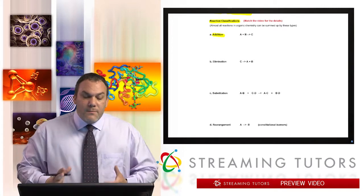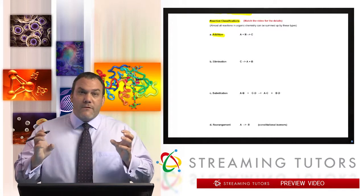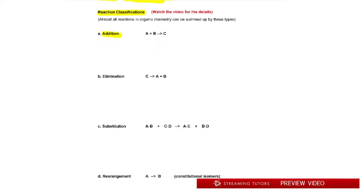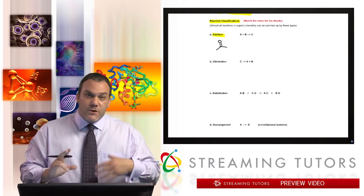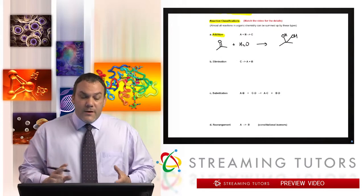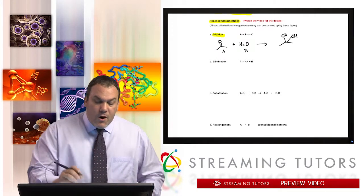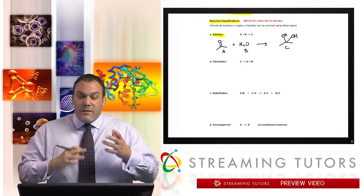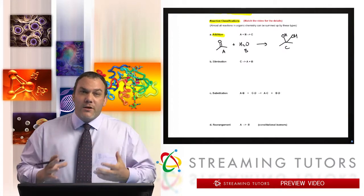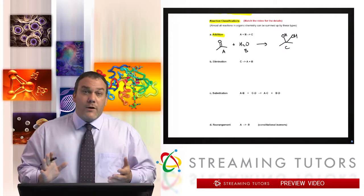The first is known as an addition, where you're taking two molecules that are independent of each other and making them into one. For example, if I have a carbonyl group and I add water into this environment, then what you wind up getting is this structure here. These two pieces A and B are coming together to make C. That's an addition reaction.